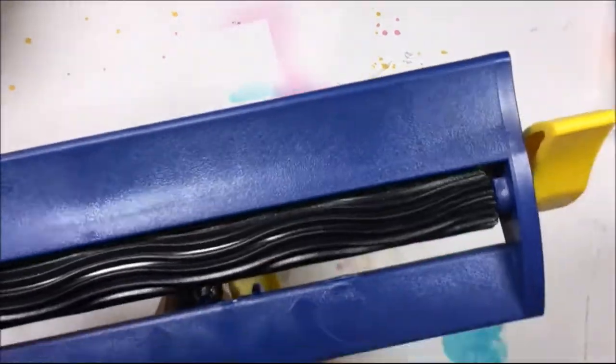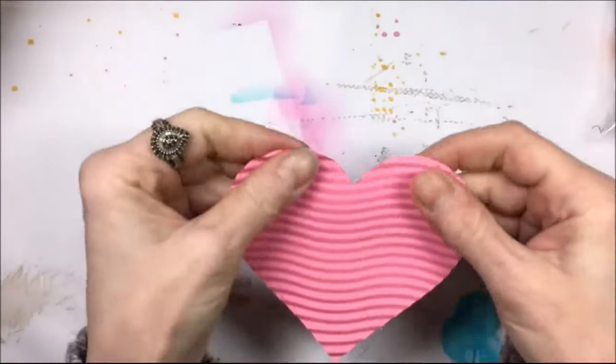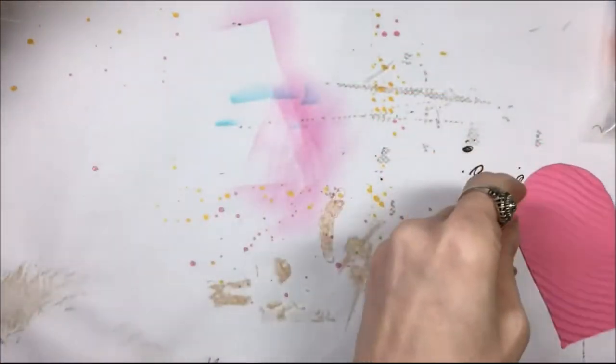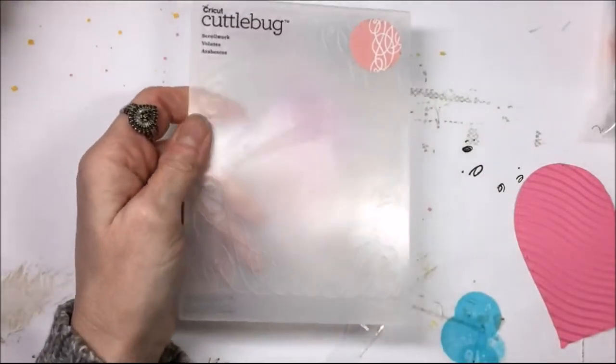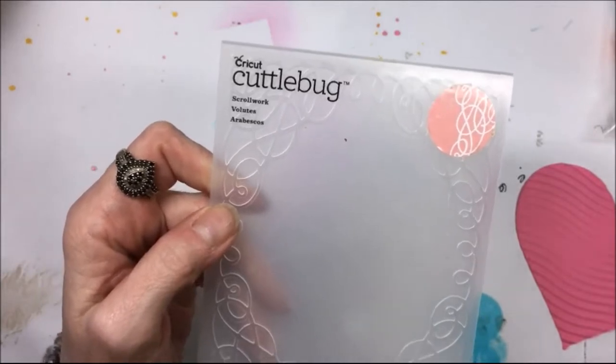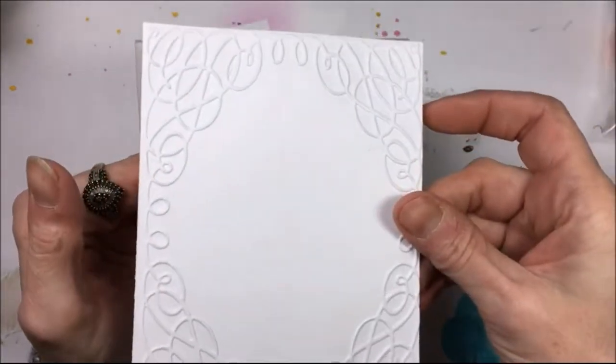It's a wavy paper crimper so I'm just going to run that heart right through there. I love these paper crimpers. There's my wavy heart, it's now embossed. Then I have this Cuttlebug embossing folder and it's just got a squiggle frame around it.